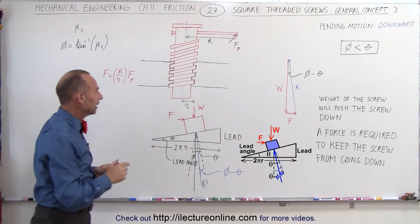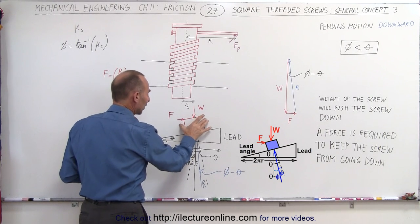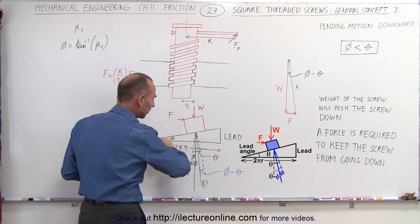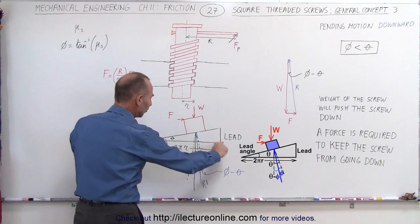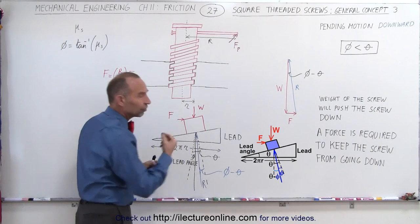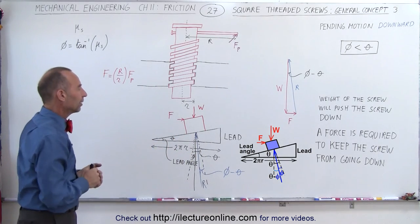So what we have then is the situation again where this is the thread of the screw, this is the thread of the object, the angle in between is what we call the lead angle, and this distance here is 2πr, which is one circumference of the thread on the screw.